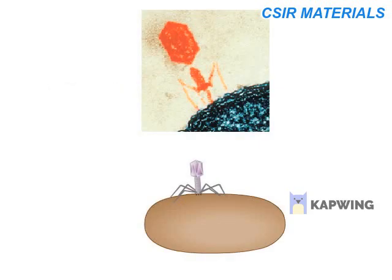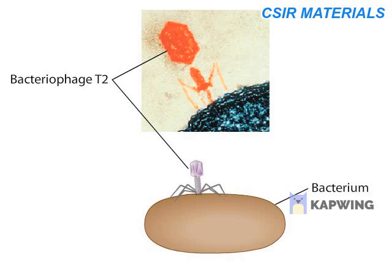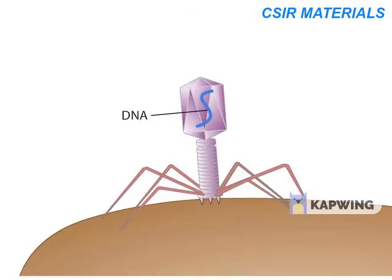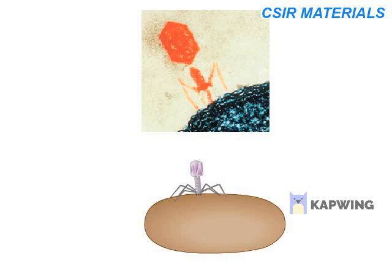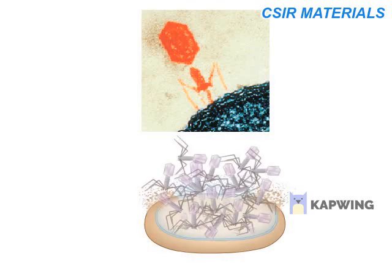The Hershey-Chase experiment was based on the biology of a virus called bacteriophage T2 that attacks a bacterium. The virus consists of a DNA core packed inside a protein coat. Part but not all of the virus enters the bacterial cell. About 20 minutes later, the cell bursts, releasing dozens of particles that are virtually identical to the infecting virus particle. Hershey and Chase deduced that the entry of some viral component affects the genetic program of the host bacterial cell, transforming it into a bacteriophage factory.